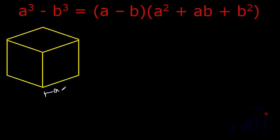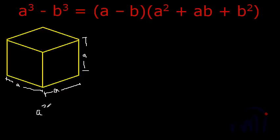Its dimensions are A by A by A. So what will be its volume? Its volume will be A cube. So I am writing it over here — it is A cube. And what are we supposed to find? We are supposed to find A cube minus B cube.